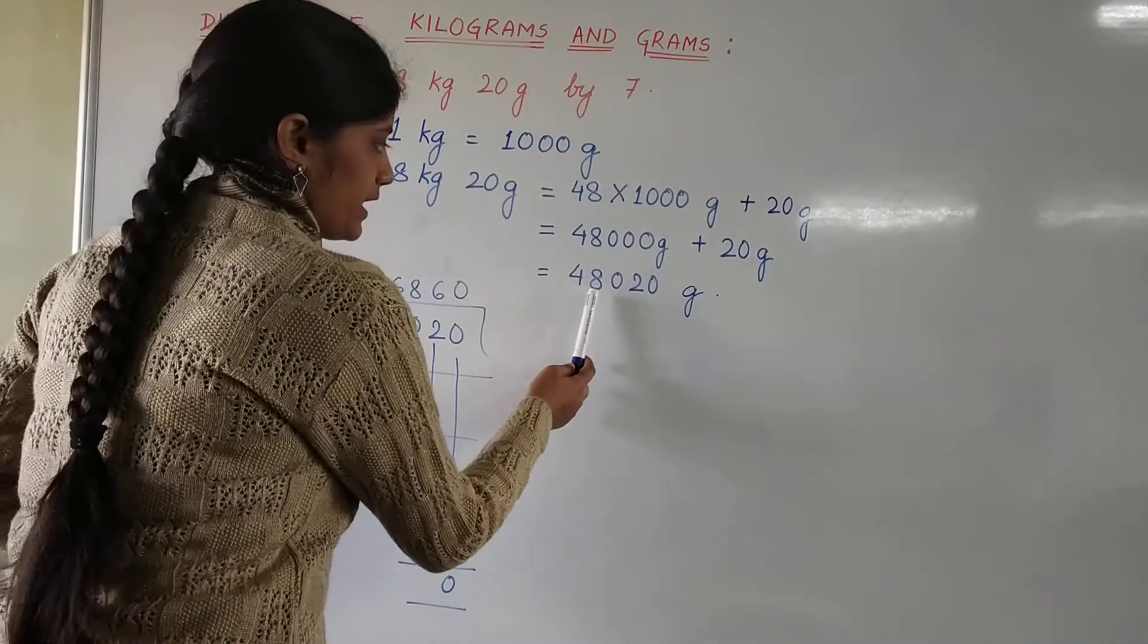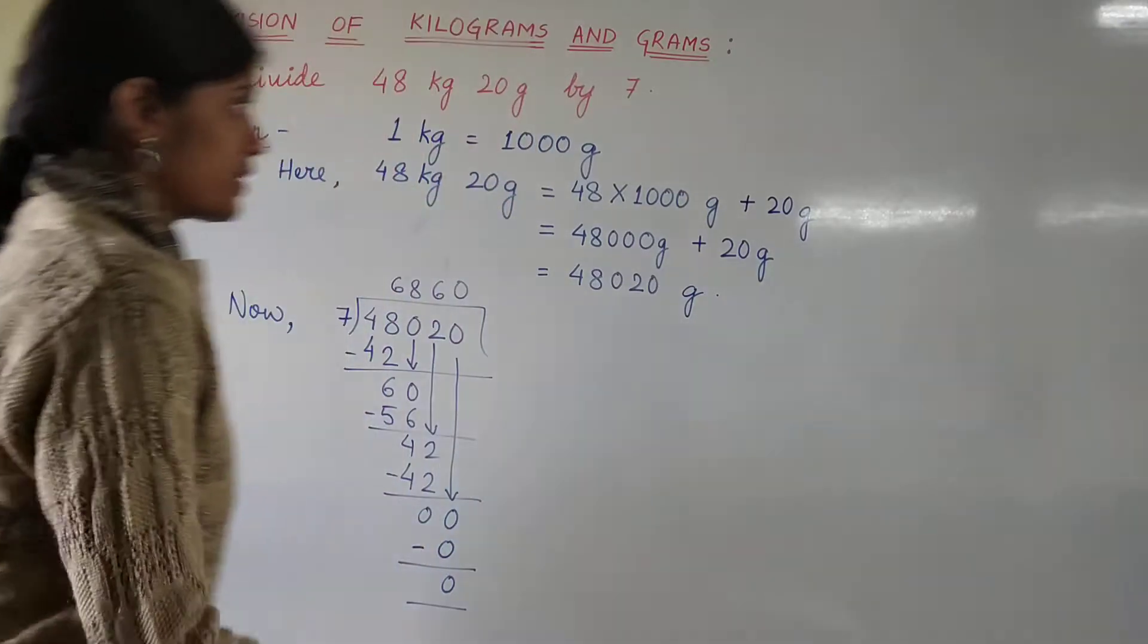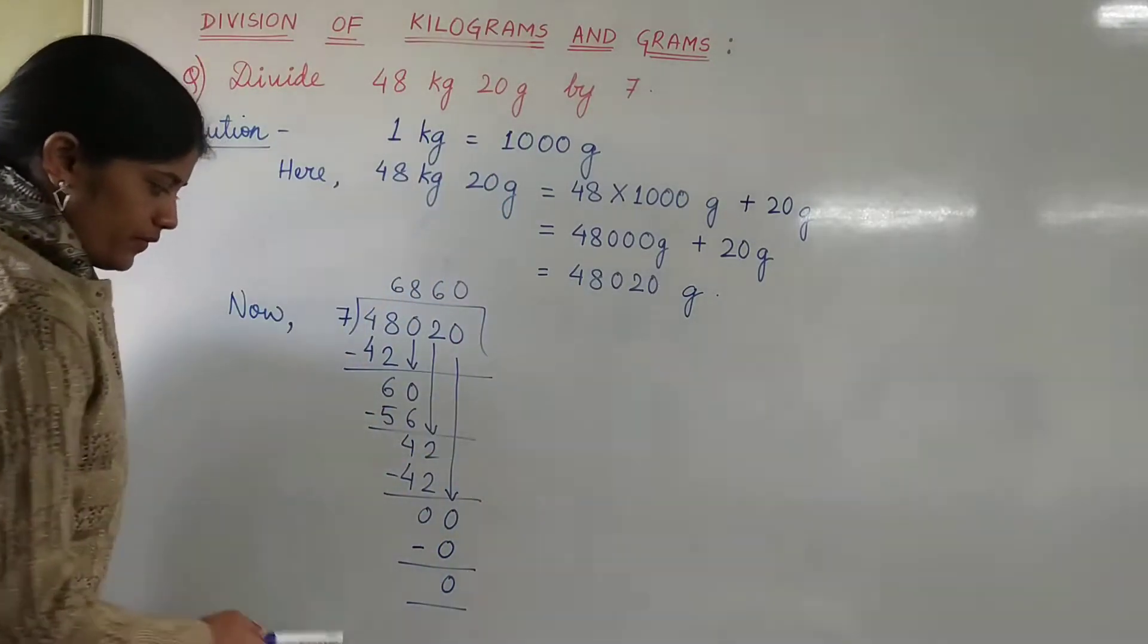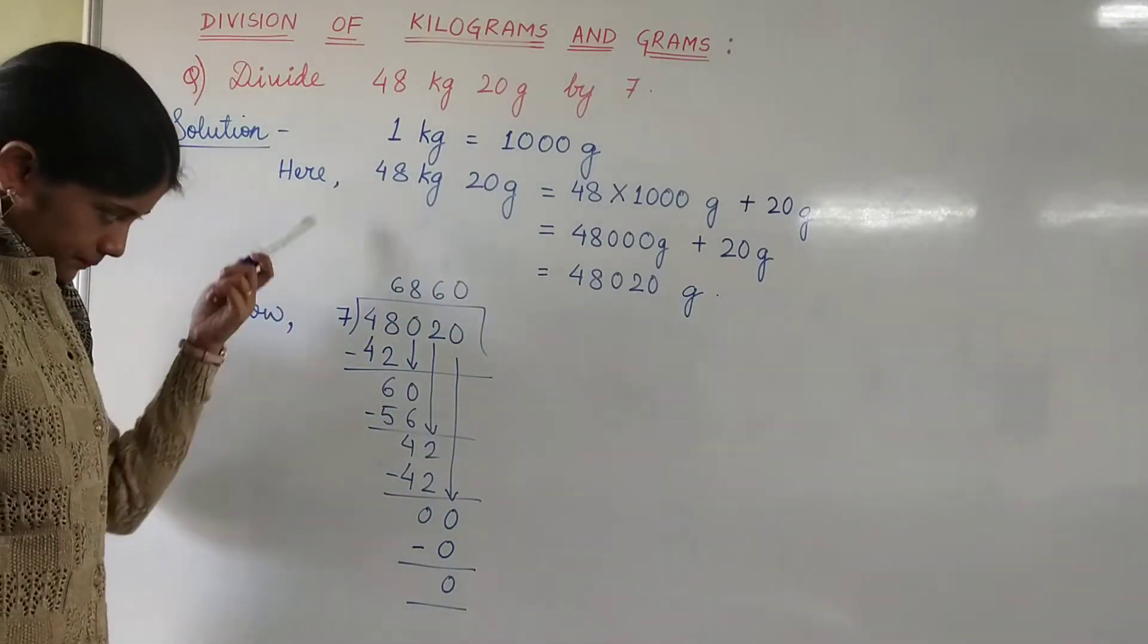This is the dividend to be divided by 7. Here we carry out the division.